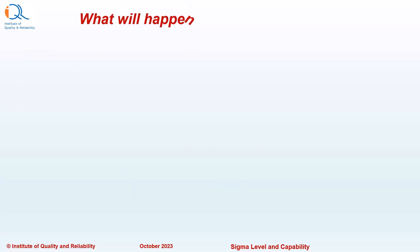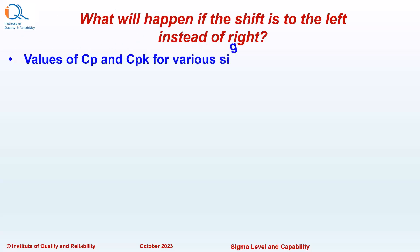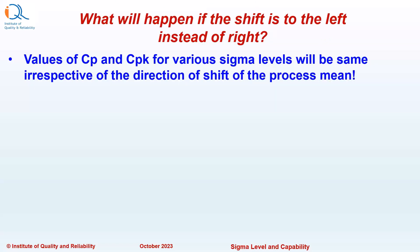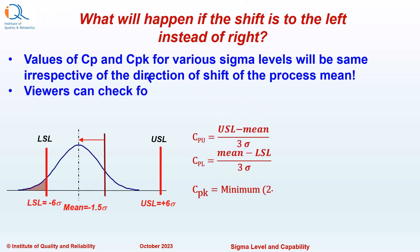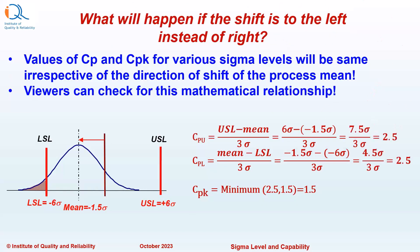In the previous illustrations, we have assumed that the process mean will shift to the right. But what will happen if the shift is to the left instead? Values of CP and CPK for various Sigma levels will be the same irrespective of the direction of shift of the process mean. Viewers can check this mathematical relationship for themselves.